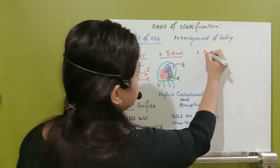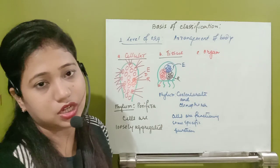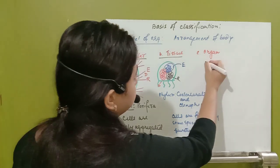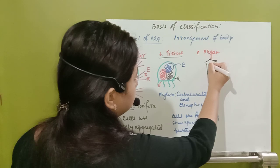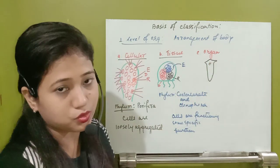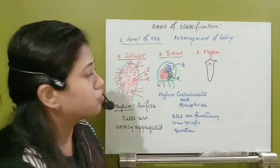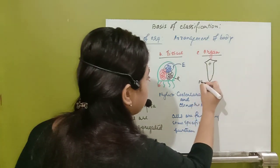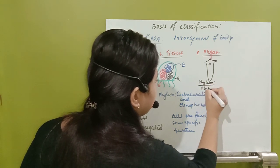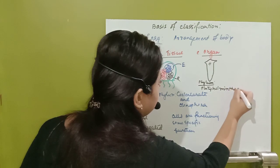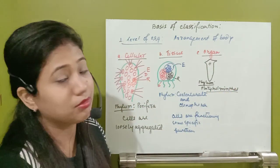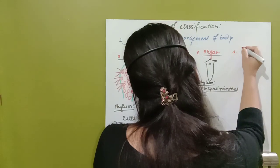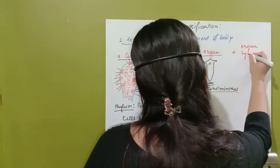The next grade of organization is the organ level of organization. In this group, each organ performs only one function. The example is a liver fluke. This type of organization is known as the organ level of organization. Only one phylum is here - phylum Platyhelminthes - which shows the organ level of organization.